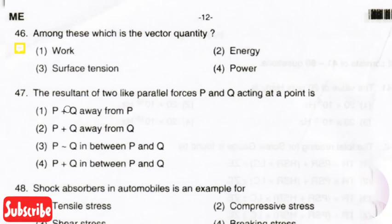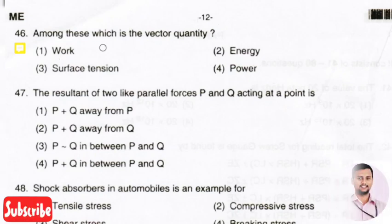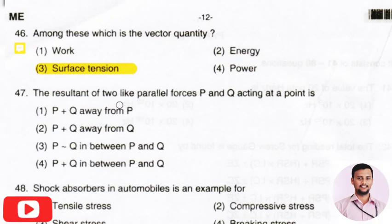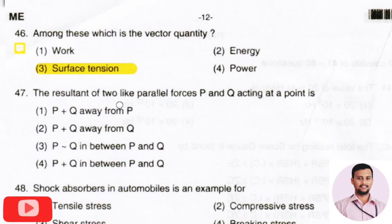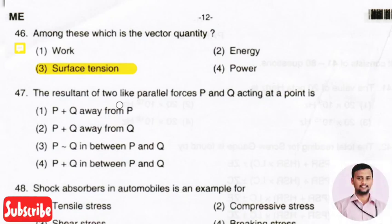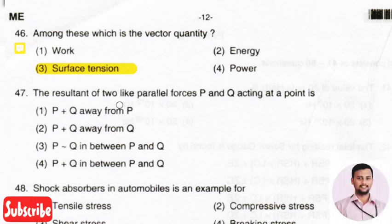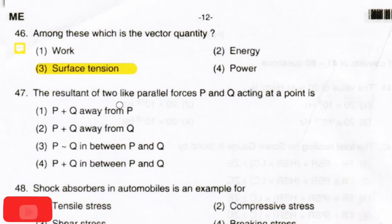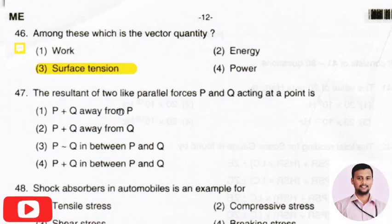The next question: which among these is a vector quantity? The right answer is option 3, that is surface tension. Surface tension is the ability of a material to shrink into a minimum area. It is considered as both a vector quantity and a scalar quantity, but in practical cases, surface tension is considered as a vector quantity.